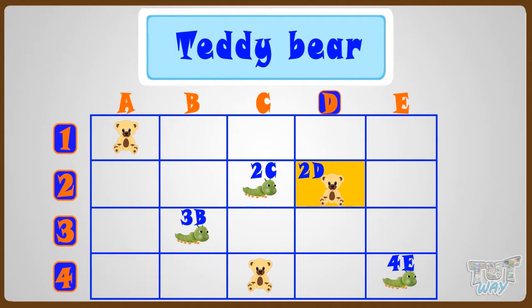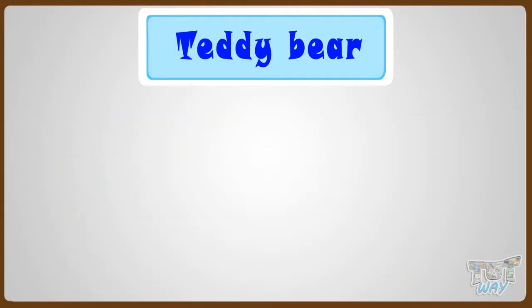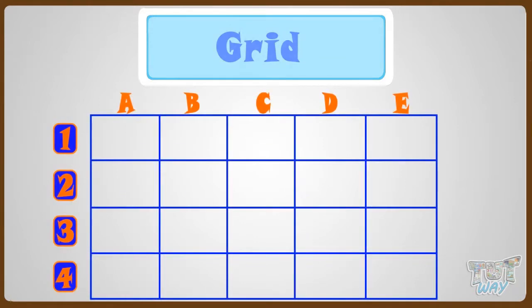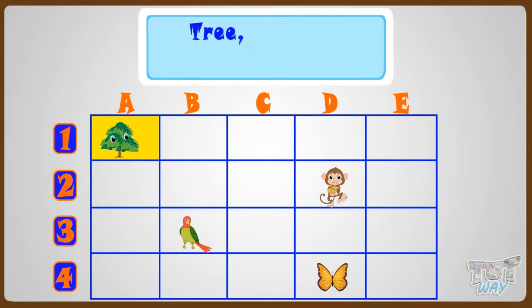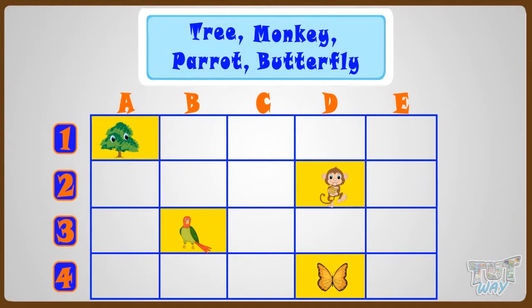So kid, now let's move to another example. Here is another grid, showing the position of 4 things. A tree, a monkey, a parrot, and a butterfly. Now let's answer a few questions based on this grid.